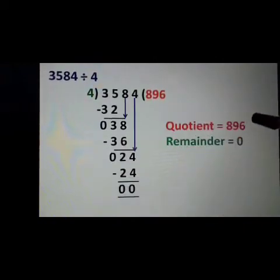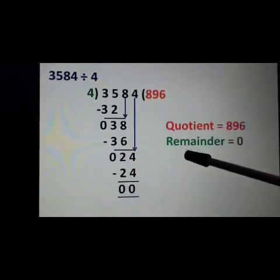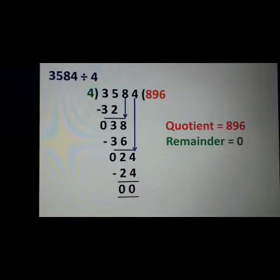We will subtract: 4 minus 4 is equal to 0 and 2 minus 2 is equal to 0. Here our quotient is 896 and the remainder is 0.